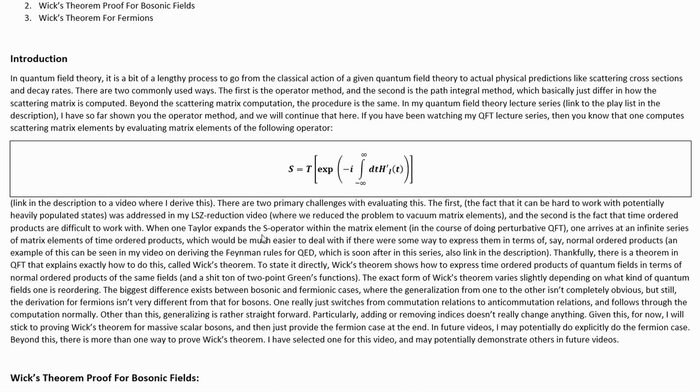When one Taylor expands the S operator within the matrix element, in the course of doing perturbative QED, one arrives at an infinite series of matrix elements of time-ordered products, which would be much easier to deal with if there were some way to express them in terms of, say, normal-ordered products. An example of expanding the S matrix like this and encountering this problem can be found in my video on deriving the Feynman rules for QED, which is soon after this in my quantum field theory lecture series, and I do apply Wick's theorem to solve that problem there.